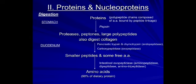For proteins and nucleoproteins, the polypeptide chains composed of amino acids bound by peptide linkages are cleaved by a proteolytic enzyme called pepsin. Pepsin is converted from pepsinogen in the presence of HCl, producing proteoses, peptons, and large polypeptides; it also digests collagen.